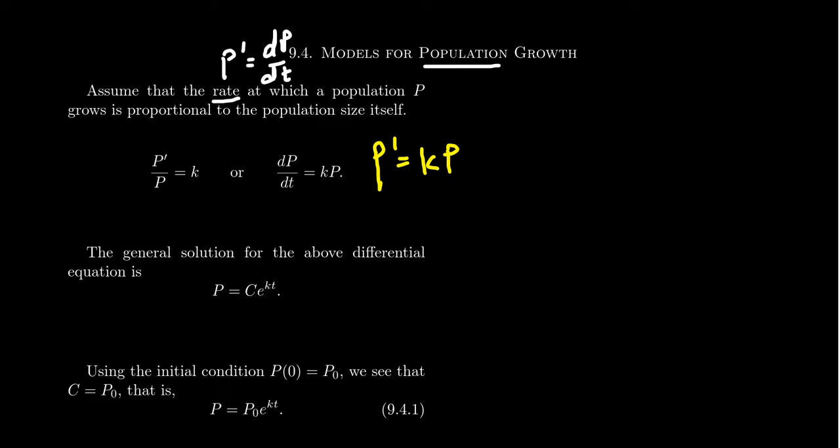So in order to model this, and this is going to be a first order differential equation, in order to solve this equation, we're looking for a function whose derivative is a multiple of the original function. Now, some things I should mention, of course, is that when K is positive, this would represent some type of growth model. When K is negative, this would represent some type of decay model. Things are getting smaller over time.